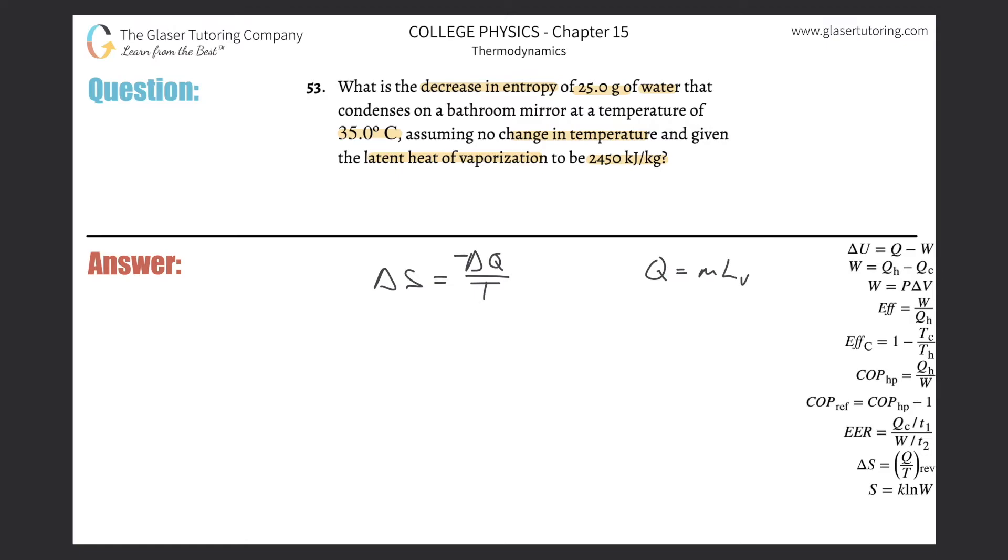I can now take this result and plug it in for Q. You might say, why is this not delta and this is delta here? In some problems, this is the heat energy lost basically, so I should technically put a delta Q there, but it doesn't really matter.